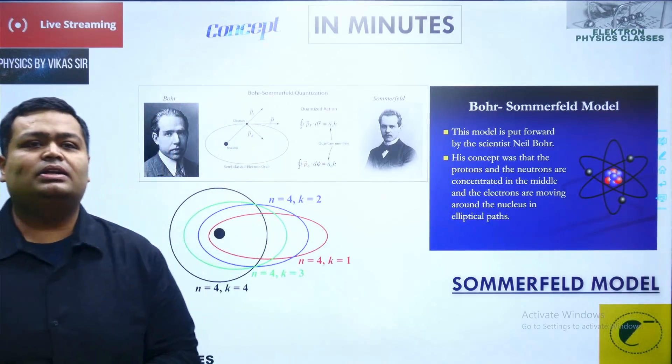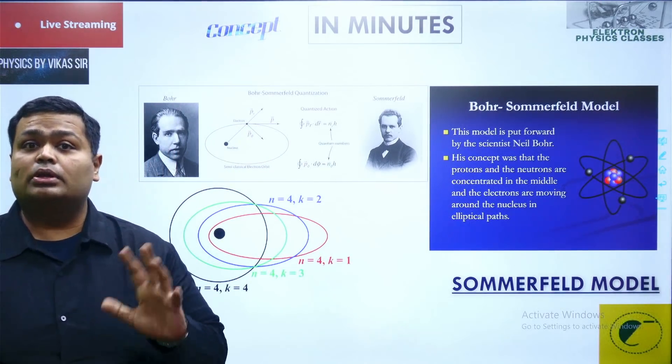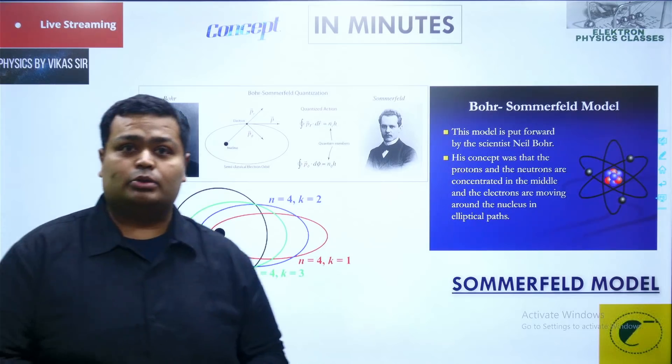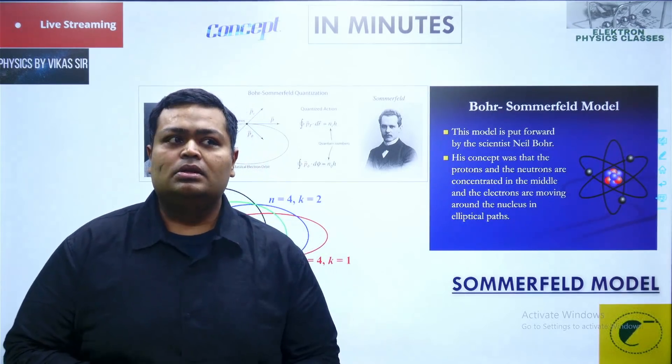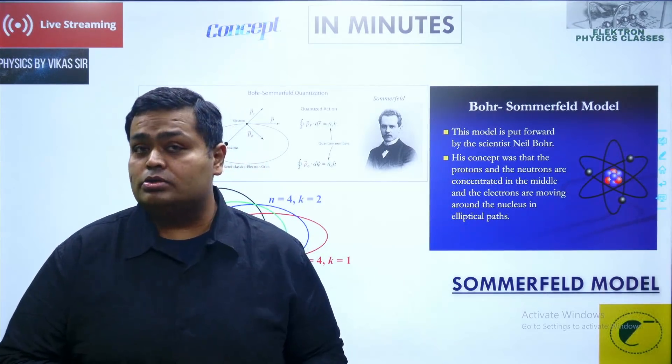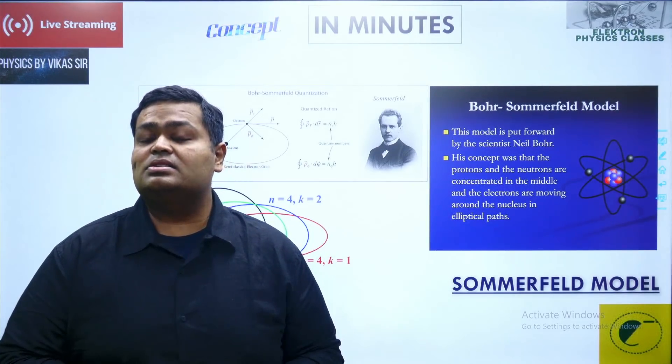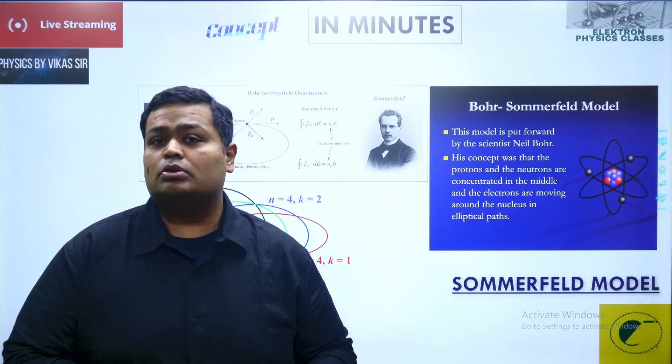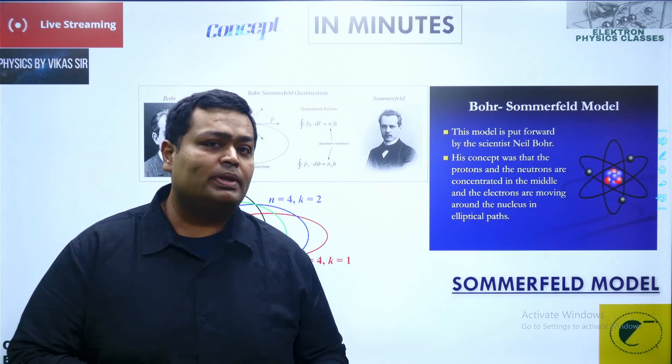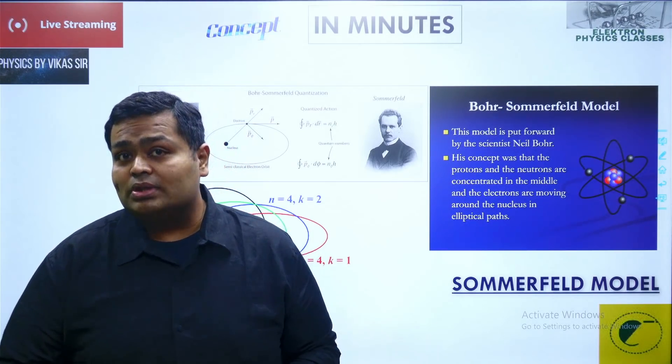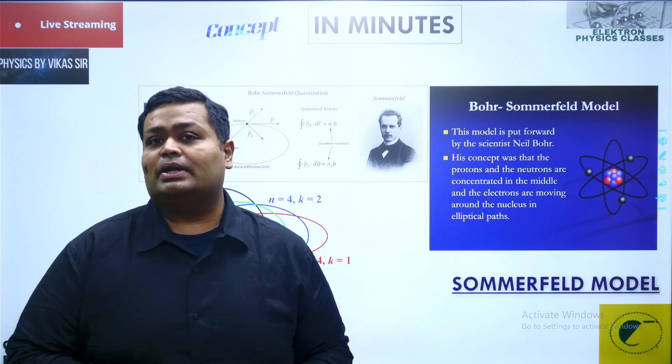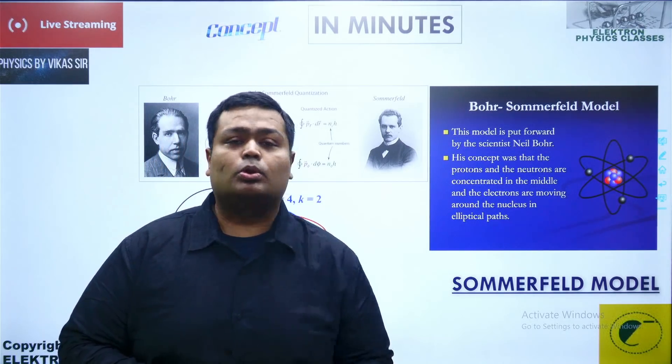Niels Bohr had told us about the circular orbits only for the electrons around the nucleus. But since the model is analogous to the planetary model, and in the planetary model we see that there is the existence of the circular orbits given by Copernicus and Newton and also the elliptical orbits adjusted by Kepler, in the same manner it is an analogous model.